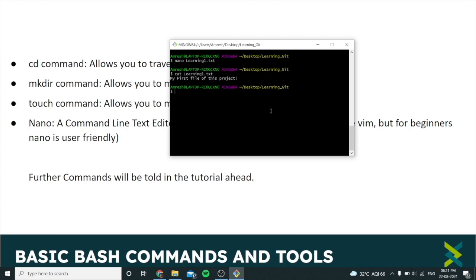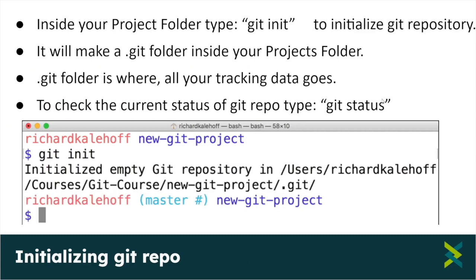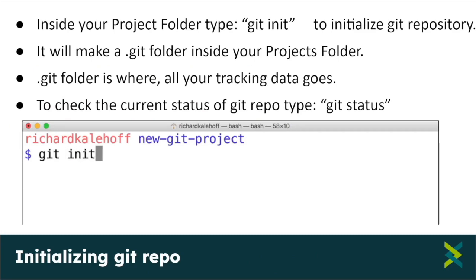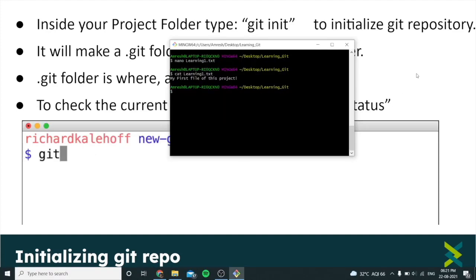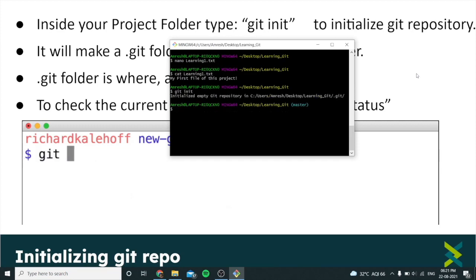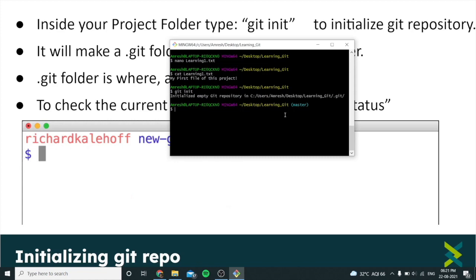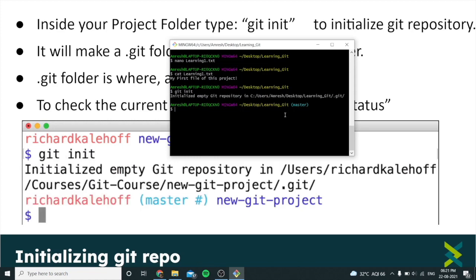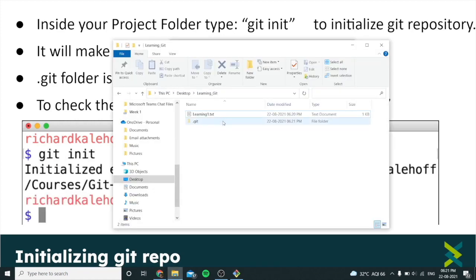This is the main step — creating a Git local repository to track all the changes you make in your project folder. To create a Git repository, type 'git init'. This will initialize an empty Git repository in the folder. As you can see, it has initialized the empty Git repository.